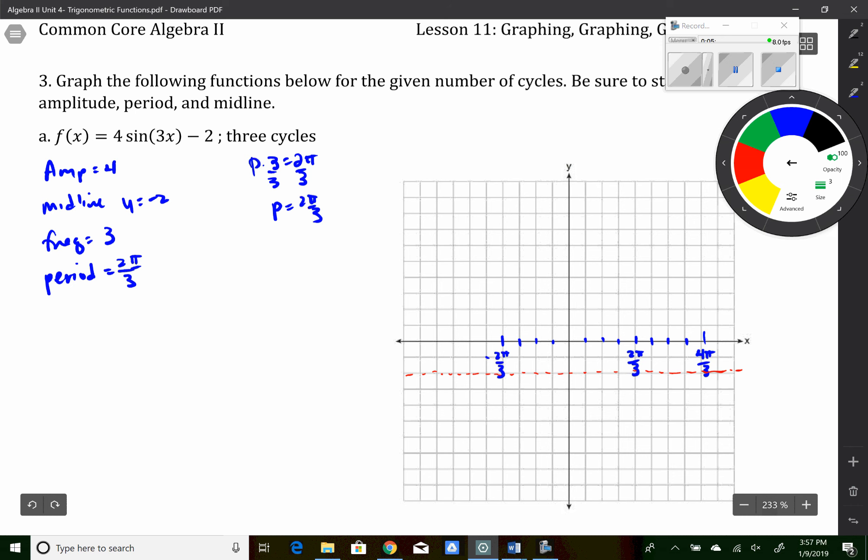Since it's a sine curve and a positive sine curve, it's going to start at the midline. After a quarter turn, it's going to go up four. After a half turn, it's back at the midline. After three quarters of a turn, it's down four. And then after a full turn, it's back to where it started. So there's one cycle of the sine curve.